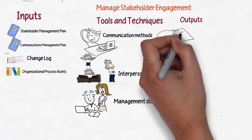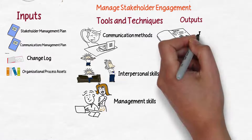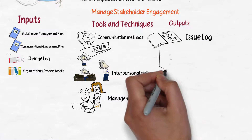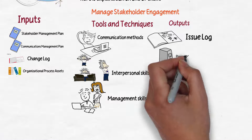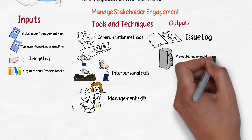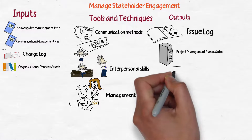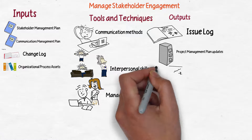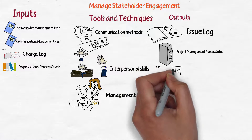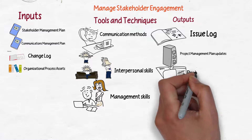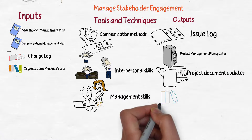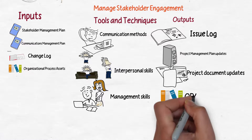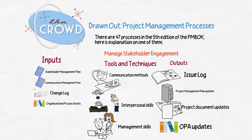And that's not really just you as a project manager, but really all stakeholders. The outputs then would be any issues that arise, the log of those issues, and the communication around that. You would also have the outputs of updates — so if things change or have been altered, your project management plan and any other documentation used in the course of the project needs to be updated and reflected accordingly. And that is the process of manage stakeholder engagement.